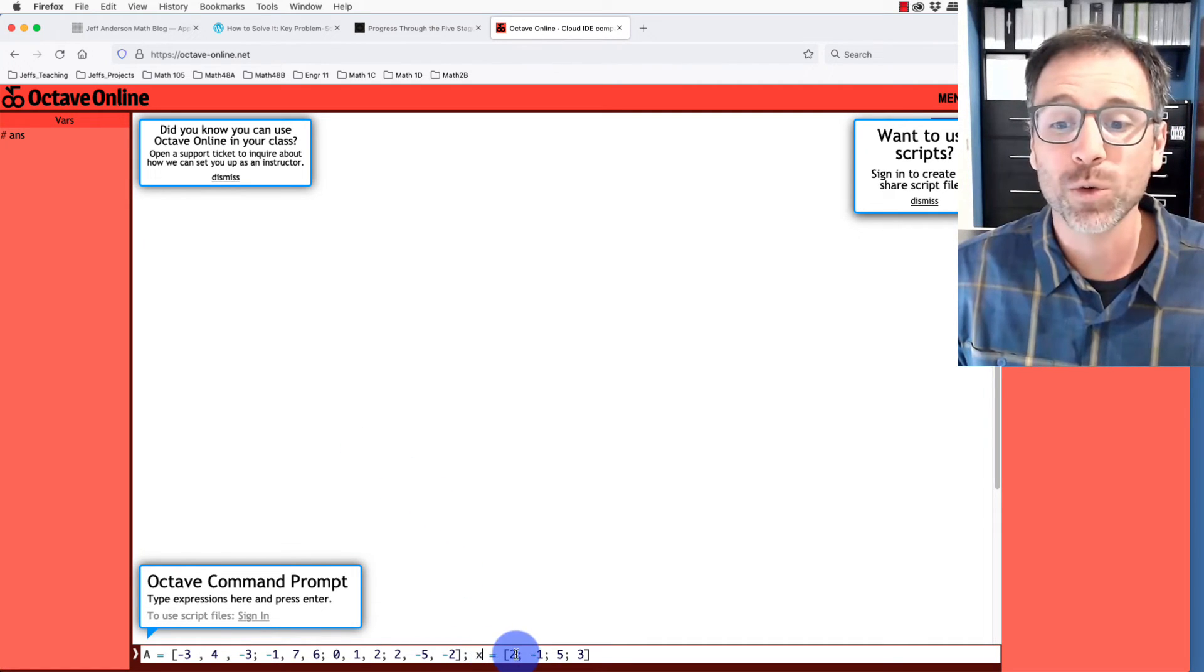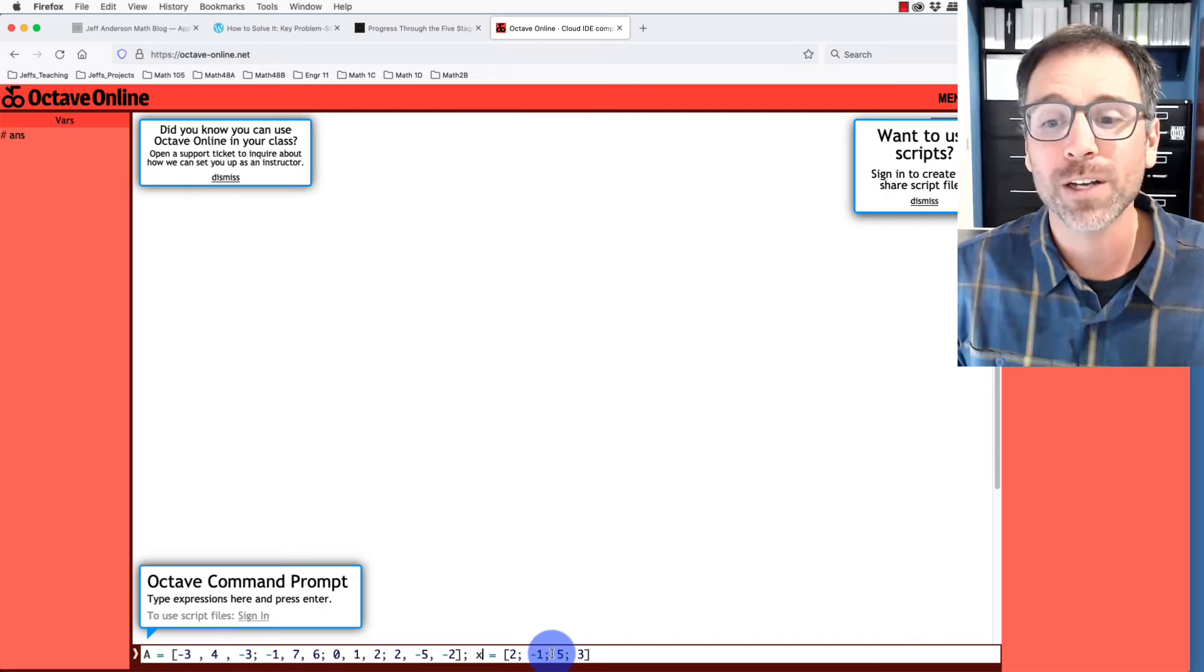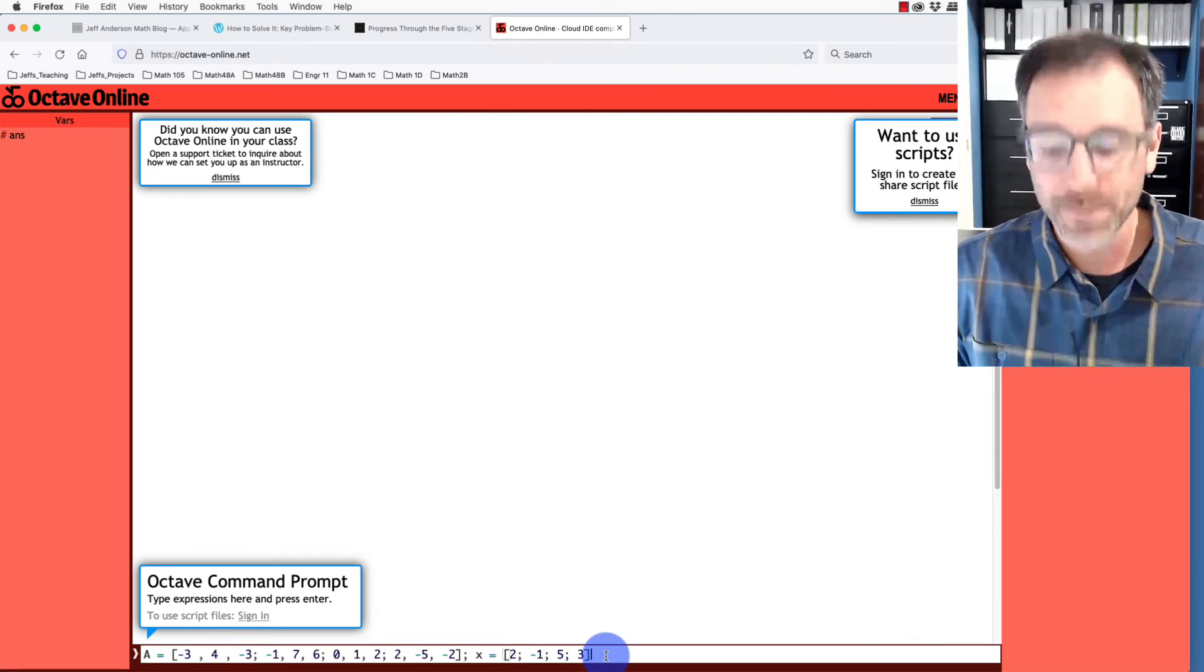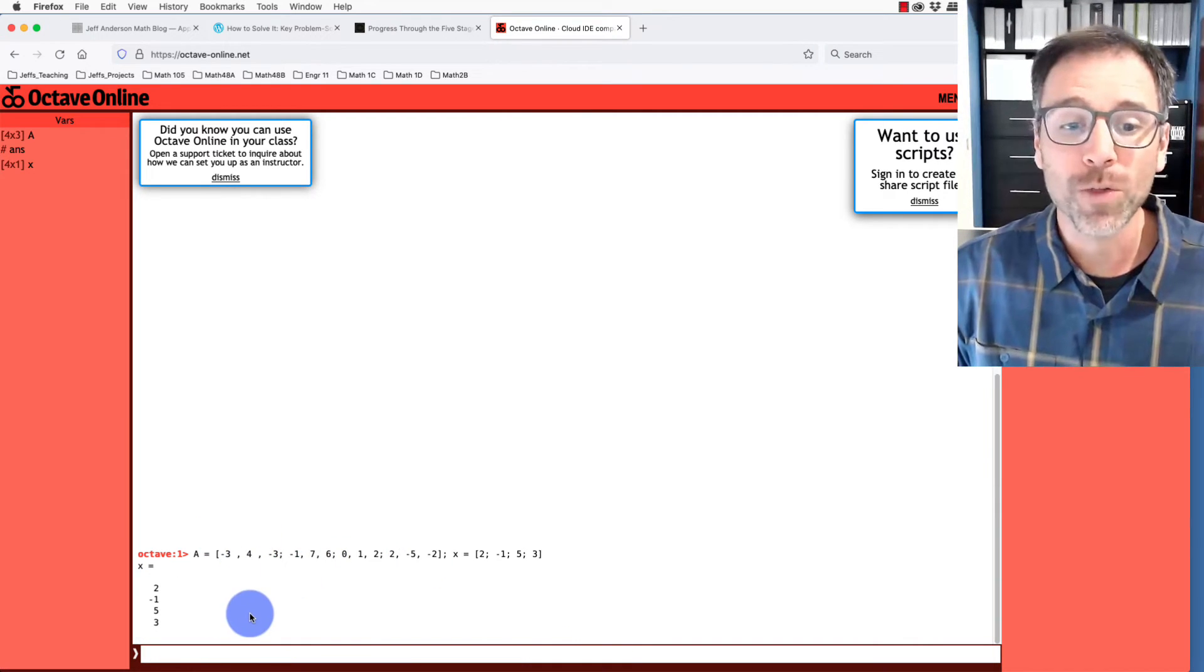And then here we'll define x equal to 2, semicolon, negative 1, semicolon, 5, semicolon, 3. When I push enter, Octave stores both in memory.